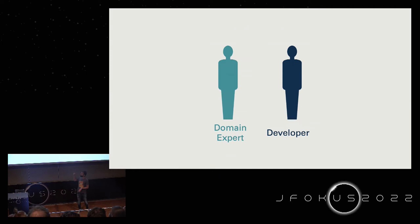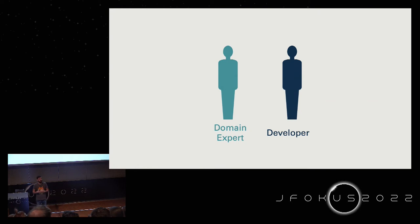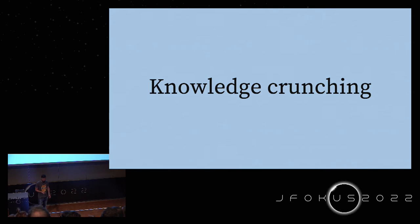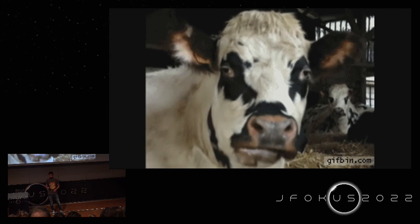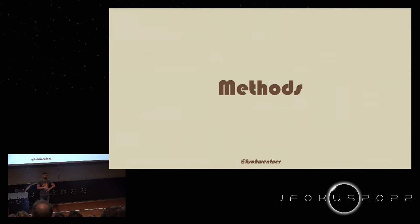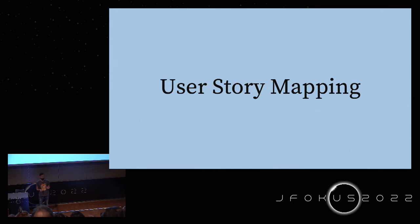The sad truth is that we developers have to talk to each other — we have to get in the same room with the domain experts. Since the pandemic is kind of over, we really have to get in the same room again, not just on the same Zoom call. We want to work together on knowledge from the domain. This is called knowledge crunching — a term from domain-driven design — where we chew on that knowledge until the essence comes out. You might have heard of user story mapping or event storming; domain storytelling is another method in this collaborative modeling space, using stick figures and arrows.